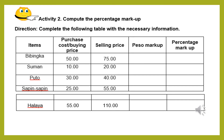For another activity, compute the percentage markup. The directions say to complete the following table with the necessary information. There are five columns, and some information in the fourth and fifth columns is missing — you will base your answers on the three given columns. The items are bibingka, suman, puto, sapin-sapin, and halaya. You are given the purchase cost or buying price and the selling price, and you will compute the peso markup and the percentage markup.